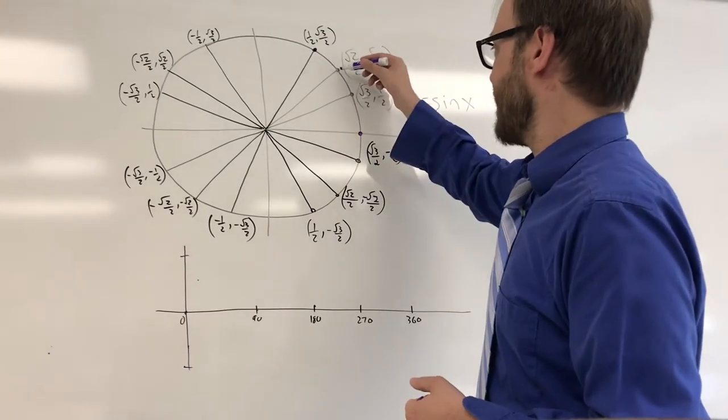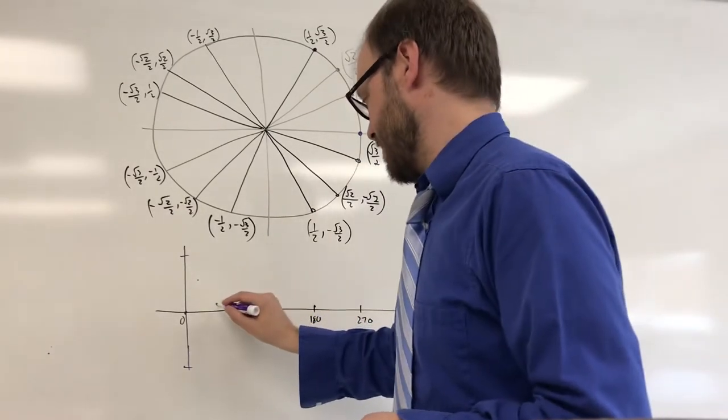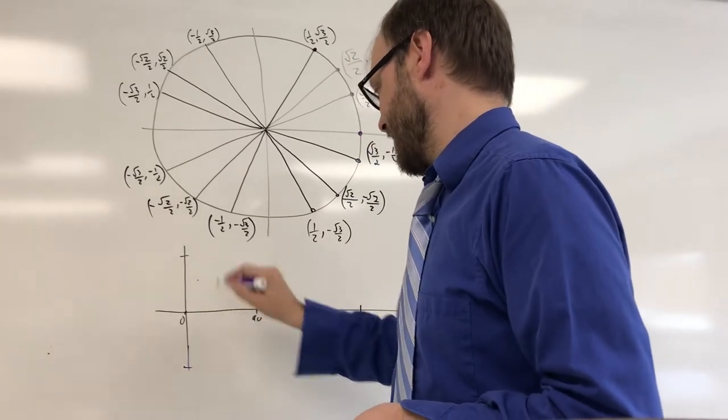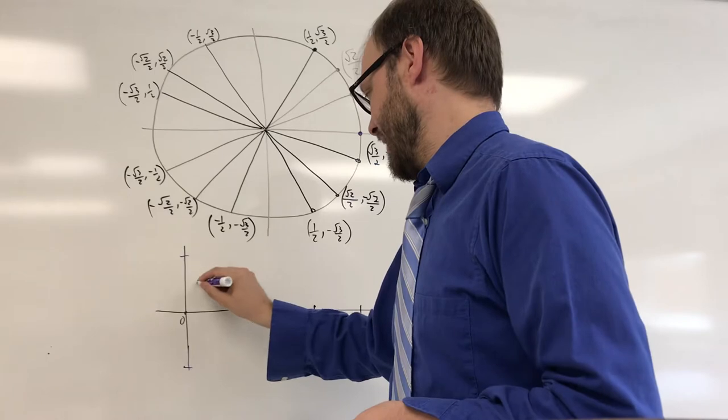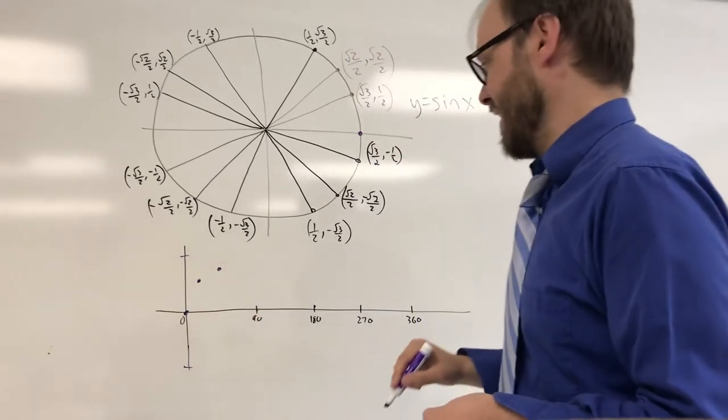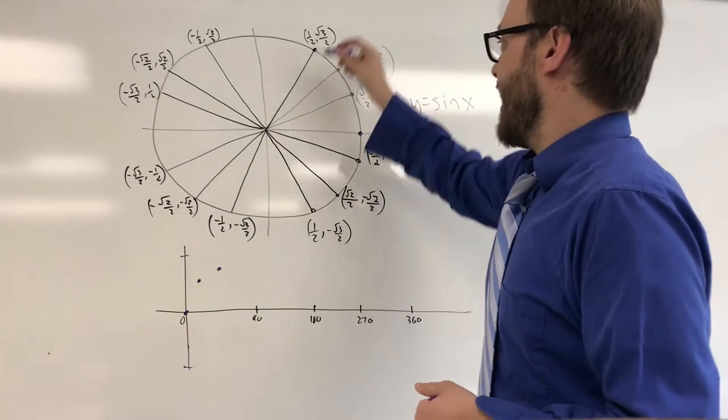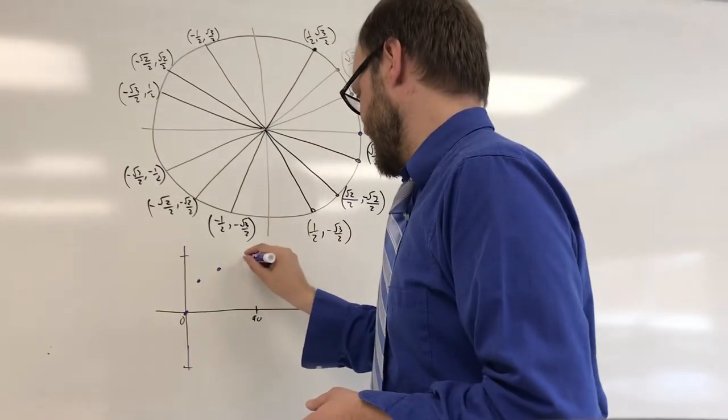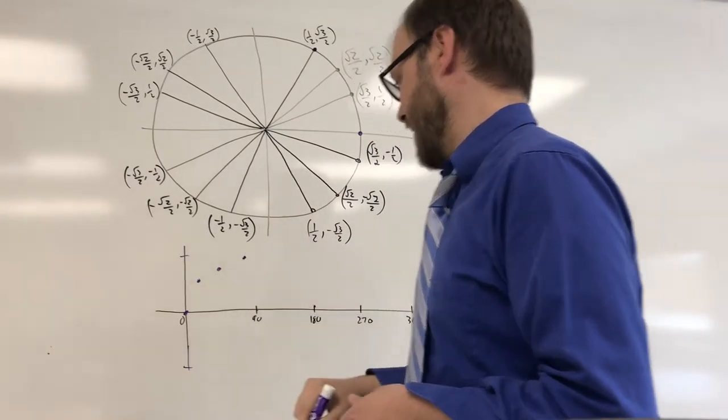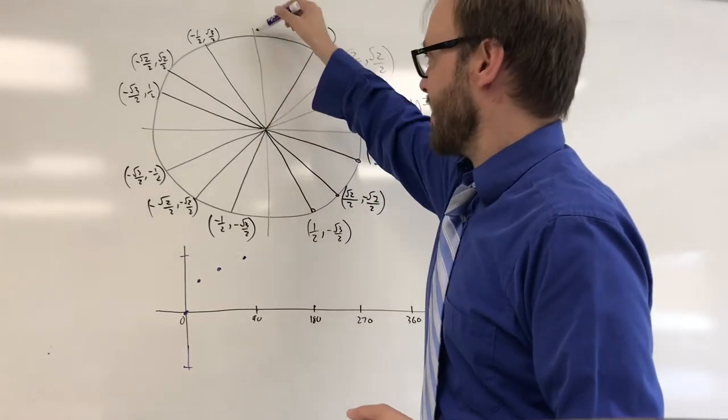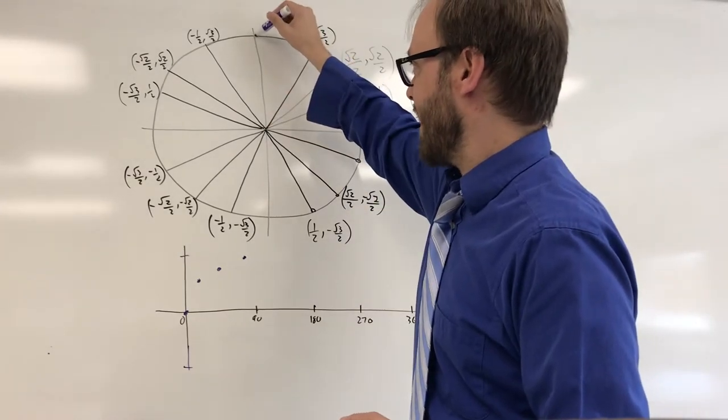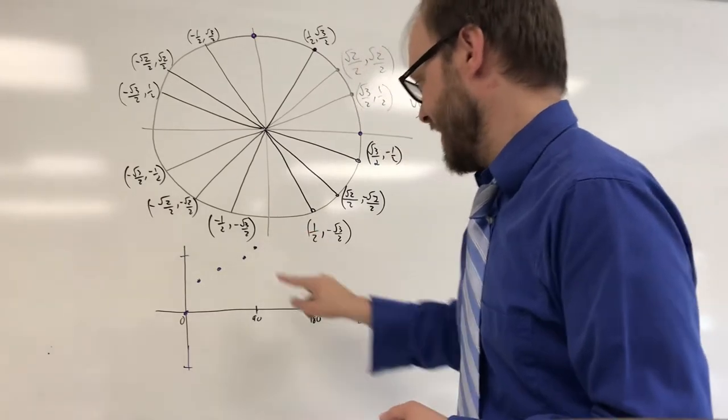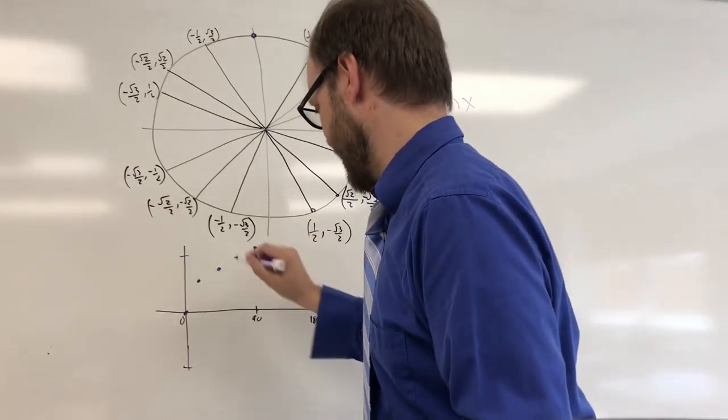Sine of 45 degrees is radical 2 over 2, which is about 0.707, so maybe that's something like right there. And then sine of 60 degrees is radical 3 over 2, which is about 0.866, so maybe a point about right there. And then sine of 90 degrees has a y-coordinate of one. So we've hit our maximum point here at one, and then we start going back downward.